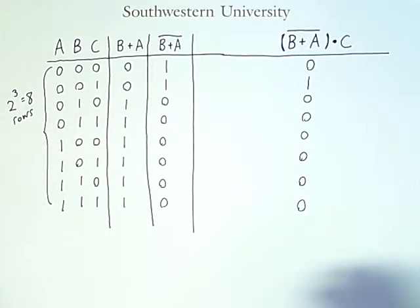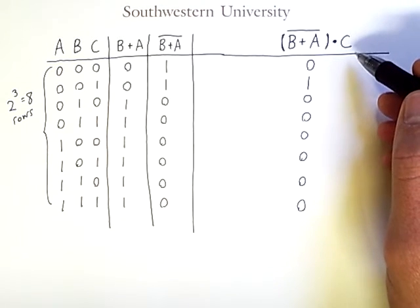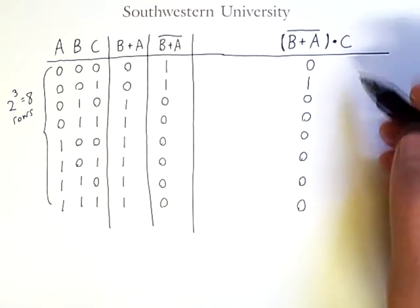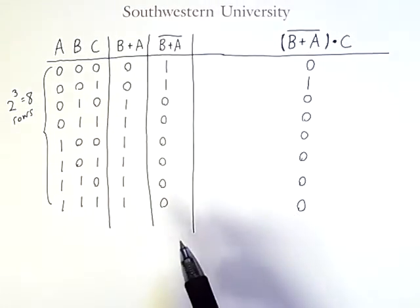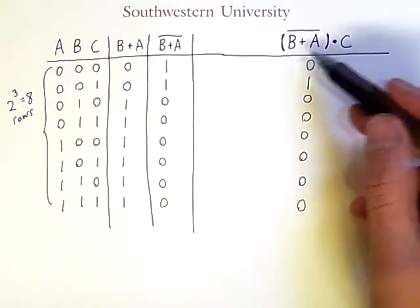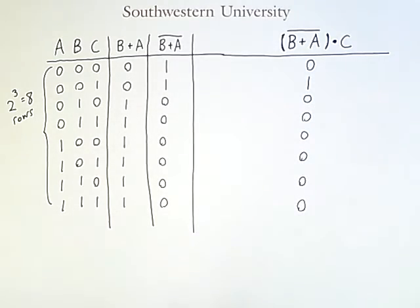So here is an example of how you would compute the truth values for a compound expression using a truth table. Now as you can see, if I add more and more variables, this table will get much larger and more tedious to compute. If the expression is much more complicated than this, then there are many more intermediate steps. So in the next video, we will find out how to simplify expressions like this algebraically.